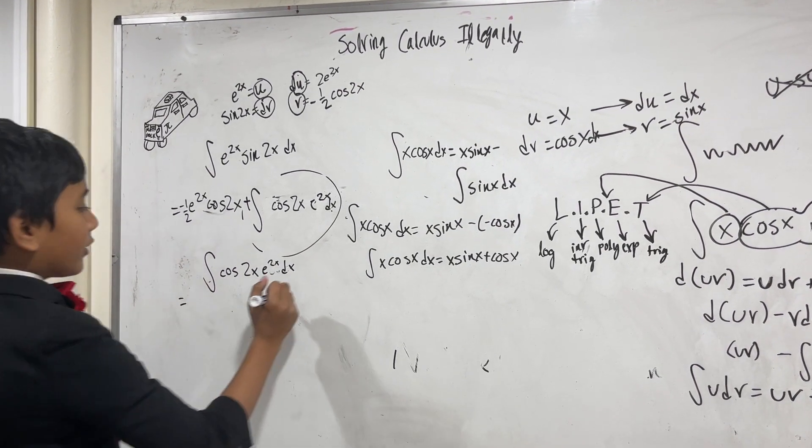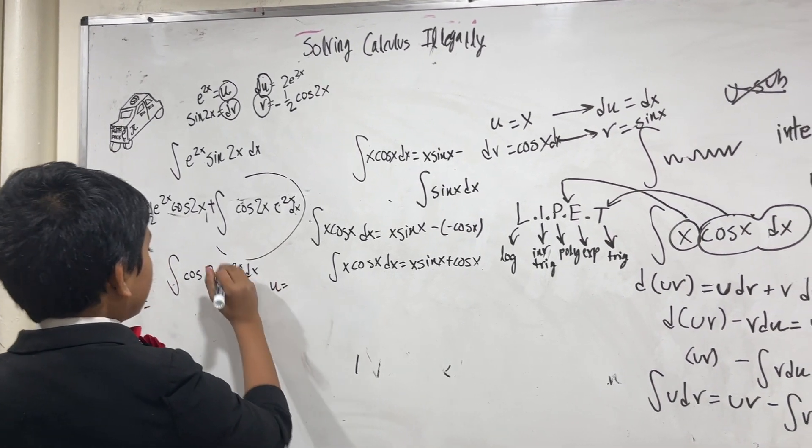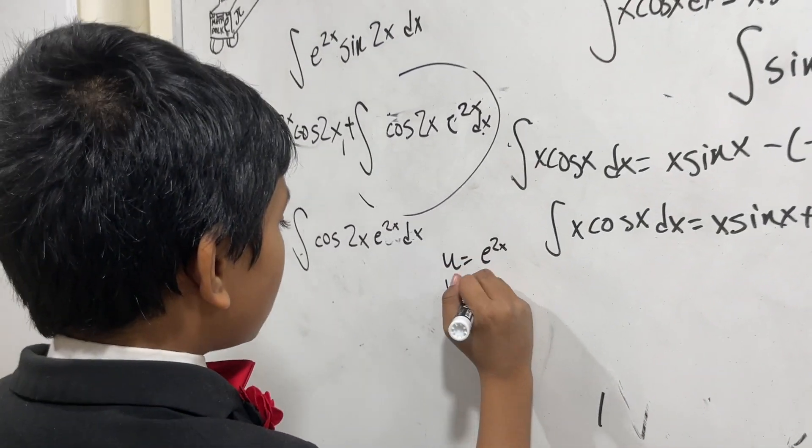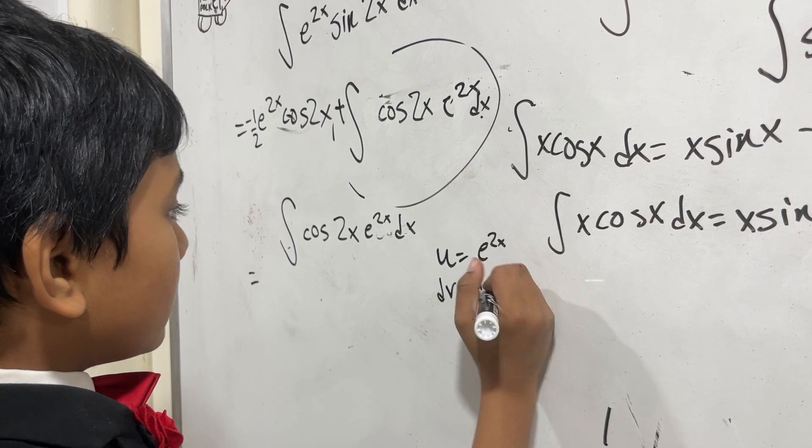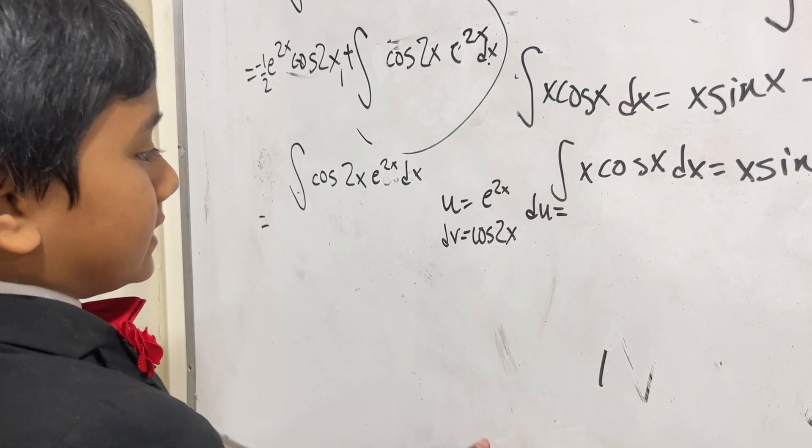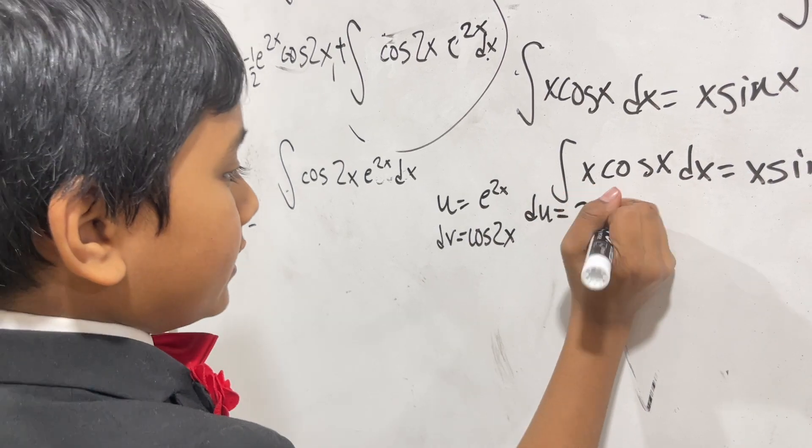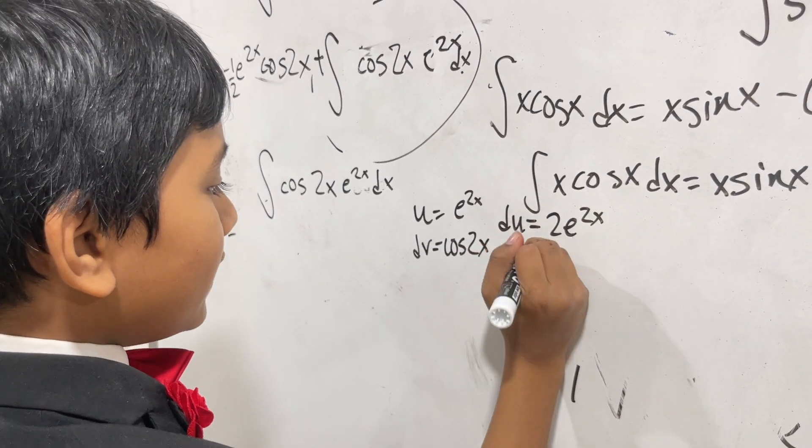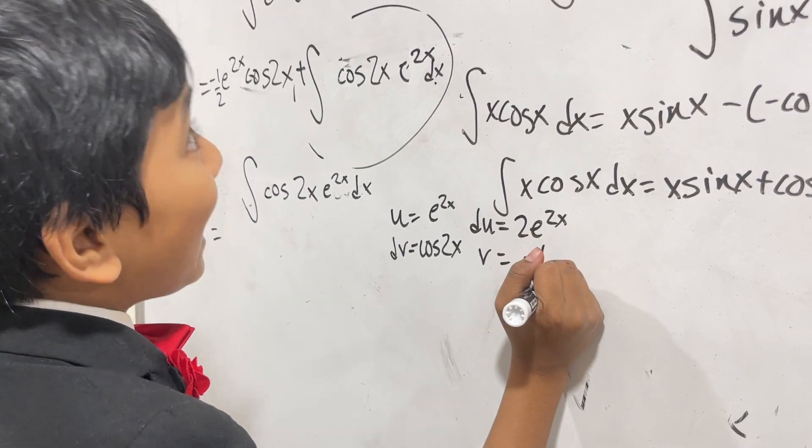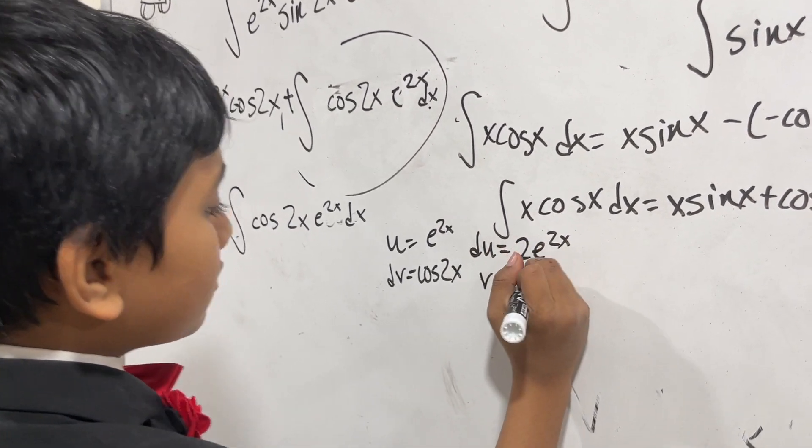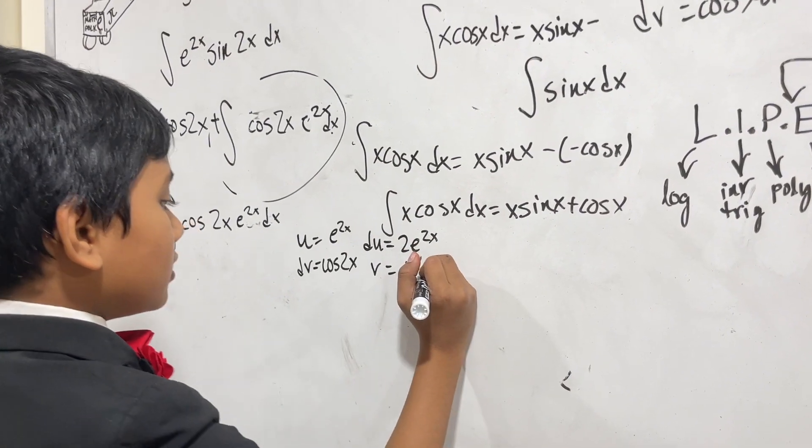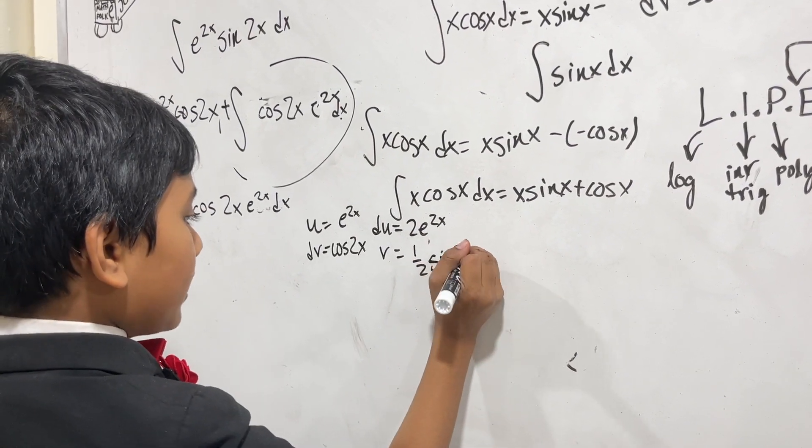The integral of cosine 2x e^(2x) dx is equal to, well we have to find our u, and once again it's going to be e^(2x), and dv is cosine 2x. And so du is equal to 2 e^(2x), and v is equal to positive 1 half sine 2x.